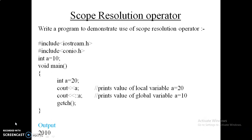Let us see an example to clear the concept. We declare two header files, iostream.h and iomanip.h. A global variable 'a' is declared with the value 10. In the main function, another variable 'a' with the same name has the value 20. If we write cout << a, it prints the local variable value, which is 20. But to print the global variable's value of 10, we use the scope resolution operator: cout << ::a, which prints 10. So the output is 20 and 10 — 20 is the local variable's value and 10 is the global variable's value.